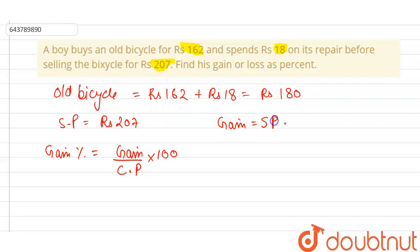So gain is equal to SP minus CP. Over here SP is 207 and CP here is 180 rupees. So now our gain is 27 rupees. Now we have to find the gain percentage, which is gain...